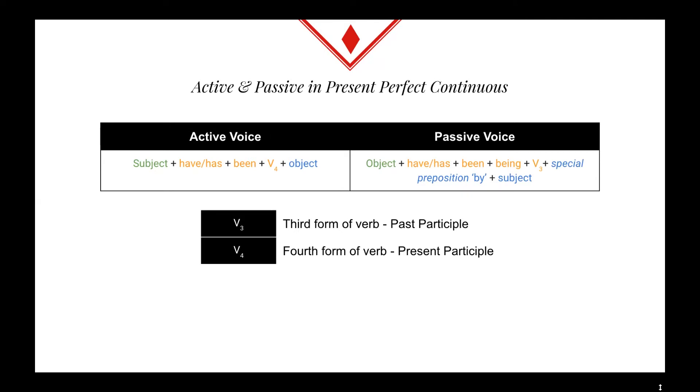In the passive voice, we have the object coming first, followed by have or has, then been, then being, and then the third form of the verb, and maybe we use the special preposition by, and lastly, the subject.